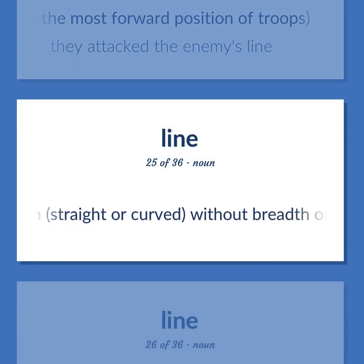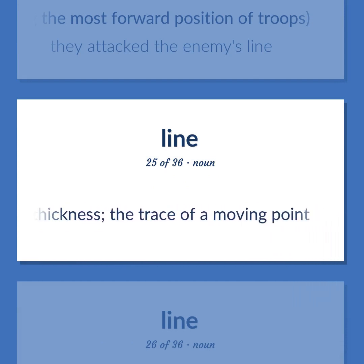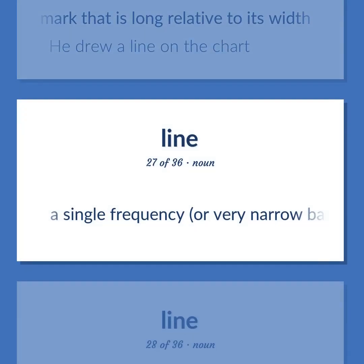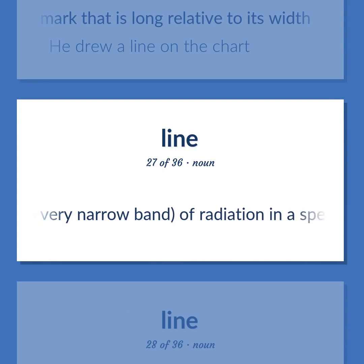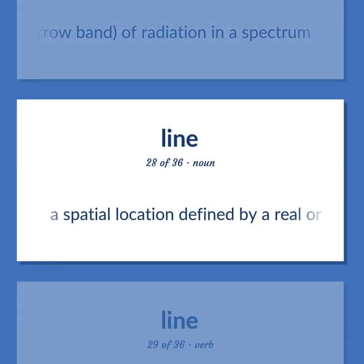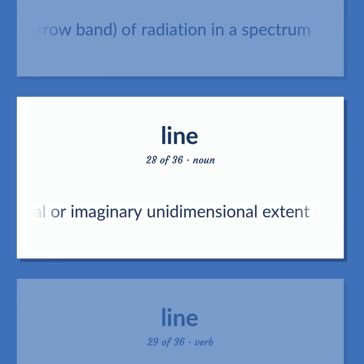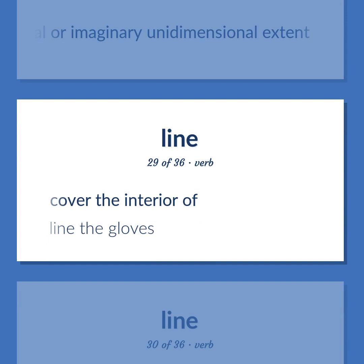A length, straight or curved, without breadth or thickness — the trace of a moving point. A mark that is long relative to its width. He drew a line on the chart. A single frequency, or very narrow band, of radiation in a spectrum. A spatial location defined by a real or imaginary unidimensional extent. Cover the interior of. Line the gloves.